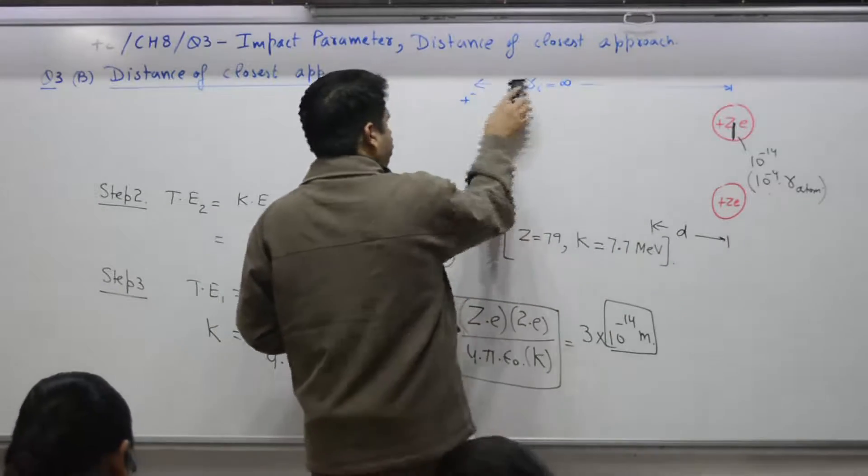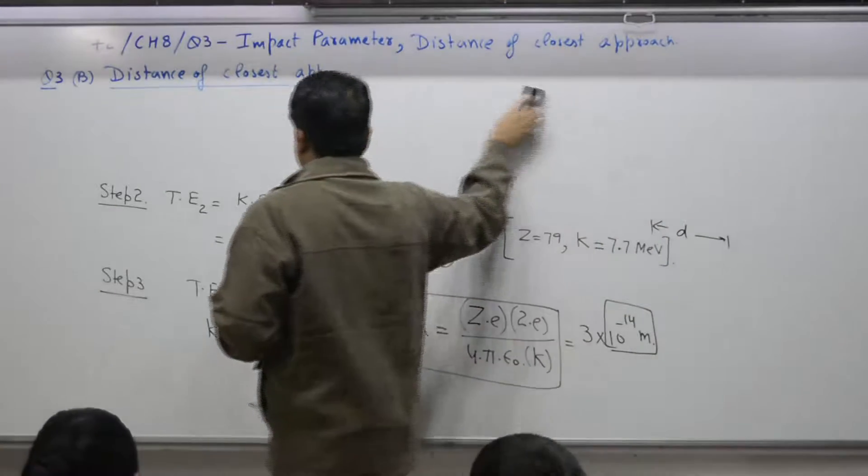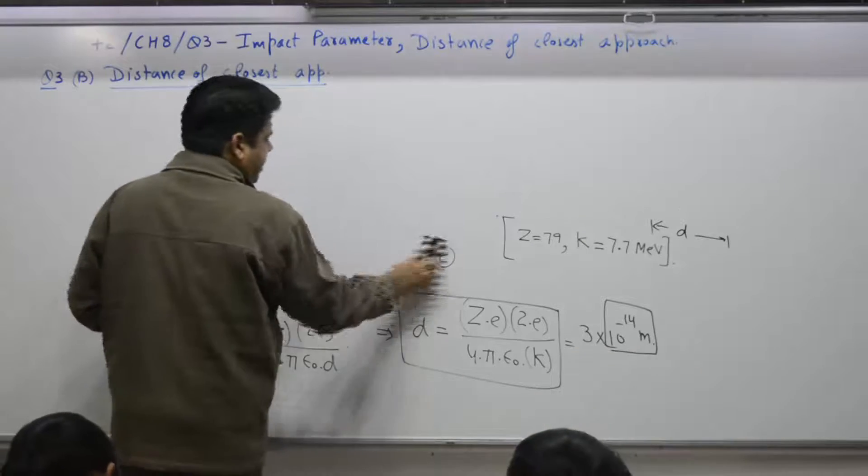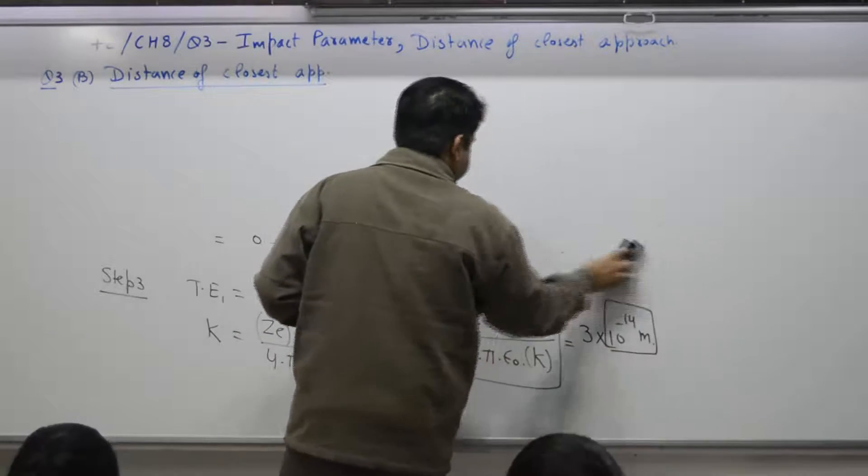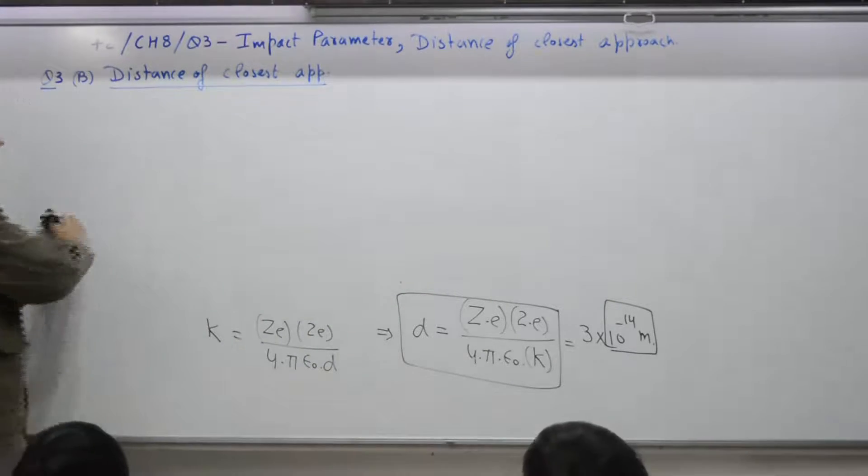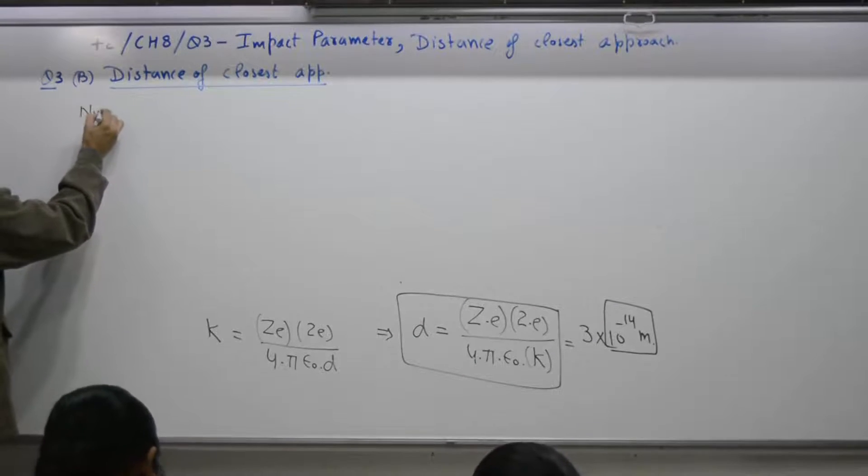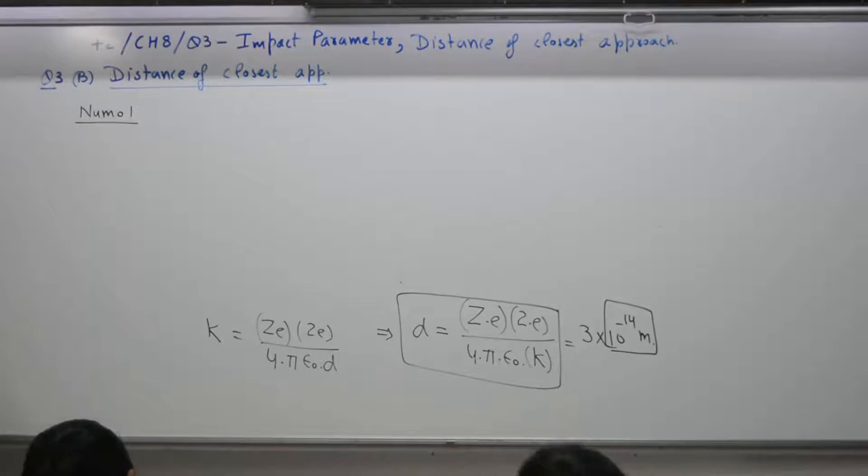You can refer to numerical number 1. Numerical number 1 is. In a head-on collision between alpha particle and gold nucleus, minimum distance of approach is 4 into 10 raised to the power minus 14 meter. Calculate the energy of alpha particle. Take Z is equal to 79.